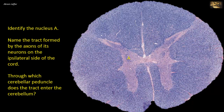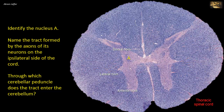This nucleus is found at the base of the dorsal horn. Note that this is a section of a thoracic segment of the spinal cord, as evidenced by the presence of a lateral horn — or intermediolateral cell column — and a narrow anterior horn. Nucleus A is the nucleus dorsalis, also known as Clark's column. It is found throughout the thoracic and upper lumbar regions of the cord.